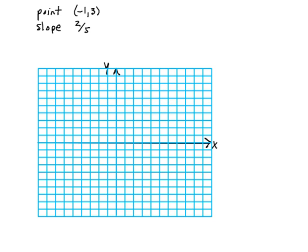So in my example here, I have a point, negative 1, 3, and I'm going to go ahead and graph that. Negative 1, 3 would be right here in the coordinate system.